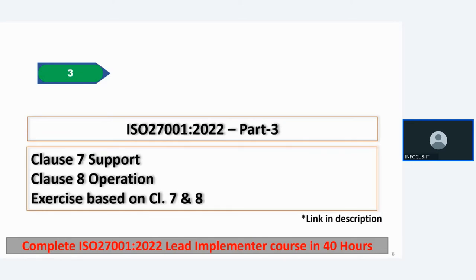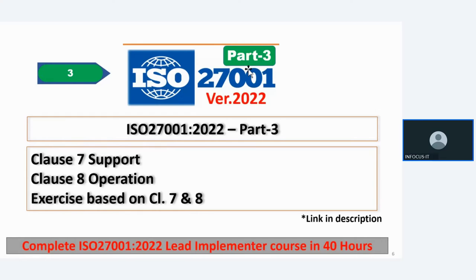Once you are done with video number 2, then comes video number 3, which will cover clause number 7 — the support clause — and clause number 8, the operation clause, along with the policy and process documents required for clauses 7 and 8. There will also be exercises given in the practical exercise book based on clauses 7 and 8. You need to complete all those exercises and submit them using the Google Form.